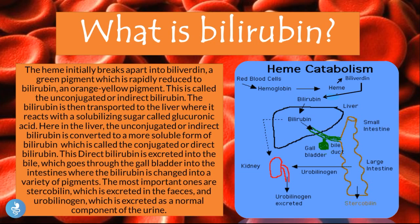The bilirubin is then transported into the liver where it reacts with a solubilizing sugar called glucuronic acid. In the liver, the unconjugated or indirect bilirubin is converted to a more soluble form called the conjugated or direct bilirubin. This unconjugated bilirubin is taken up by the liver and undergoes a conjugation process so that it becomes more soluble and the body can excrete it more easily.